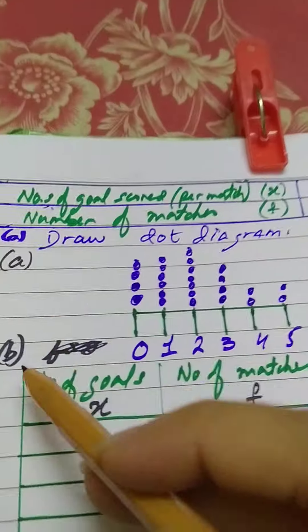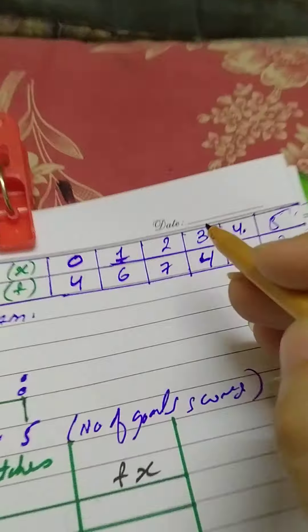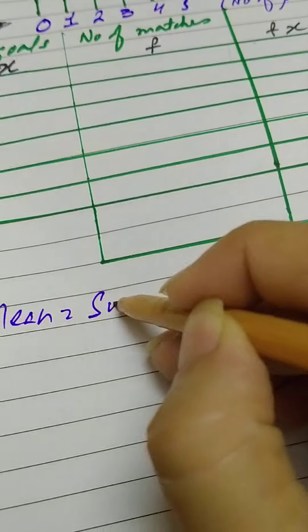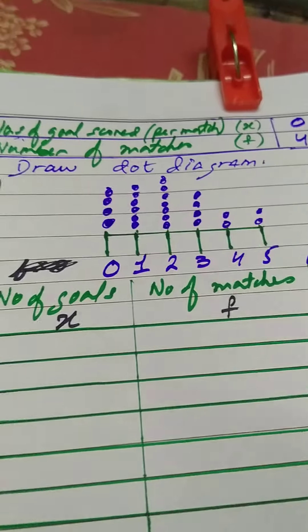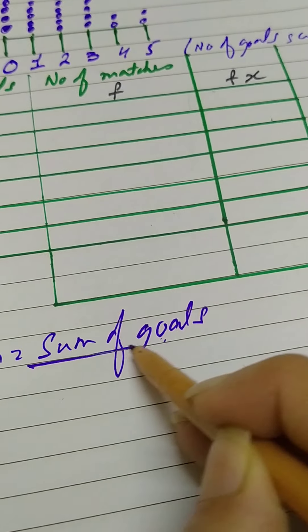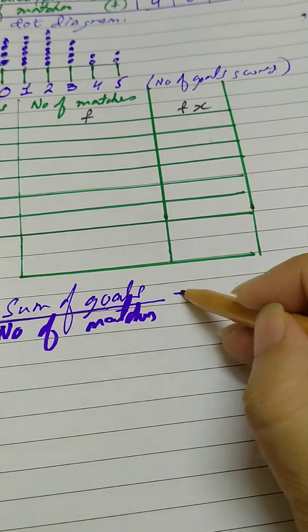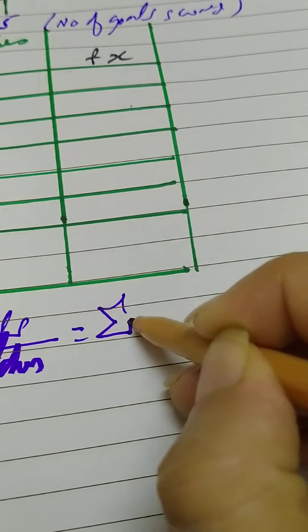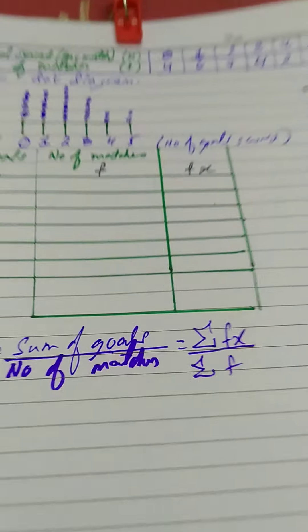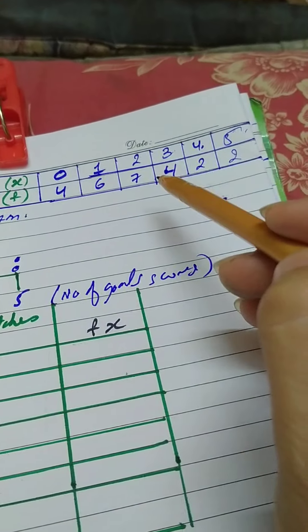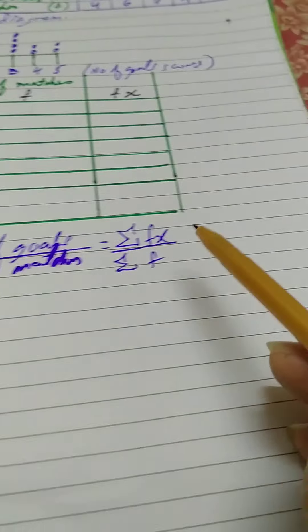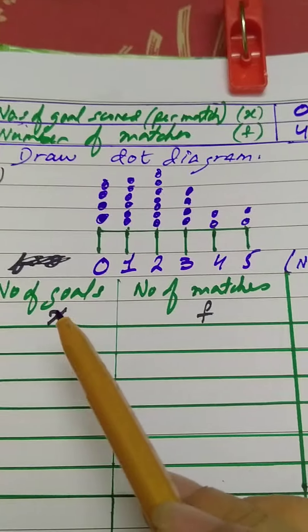The second part asks to find the mean number of goals. To find the mean from a frequency table, remember the formula: mean equals sum of data divided by quantity of data. When a frequency table is given, we use the symbolic formula: mean equals sum of fx divided by sum of f, instead of simply summing all goals directly.